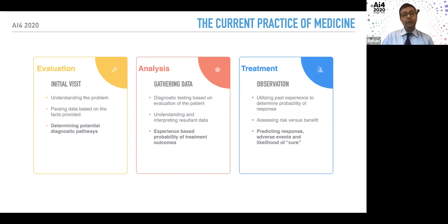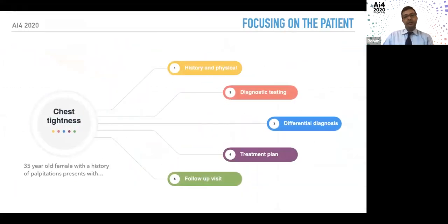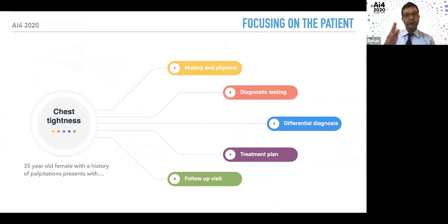Consider a 35-year-old female with a history of palpitations who comes to the emergency room with chest tightness. The five steps we do every day are: history and physical, ordering appropriate testing, coming up with a differential diagnosis, developing a treatment plan, and then improving symptoms — followed by a follow-up visit plan if not admitted. This is a very algorithmic approach to medicine, and if we adapt it to machine learning and AI, we can see how well they blend together.